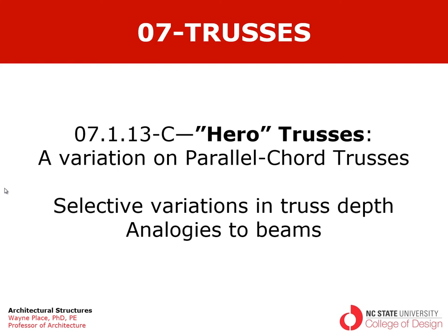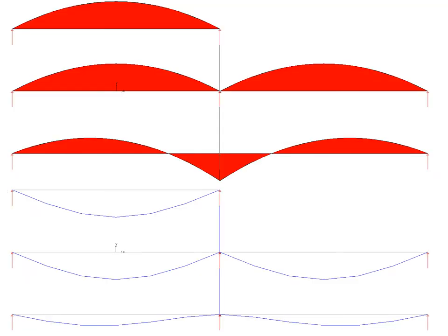We're going to discuss, first of all, selective variations in truss depth as a way of responding to where the worst moments tend to occur. Second, we're going to draw some analogies to beams, because we've already talked about this issue in regard to beams. If we have a simple span between two points, we have a moment diagram that looks like a parabola. If we have three supports, we can do two simple spans, producing this fundamental parabolic variation in the moment diagram.